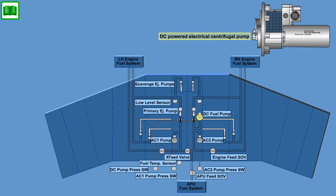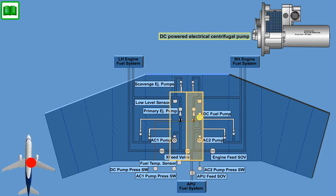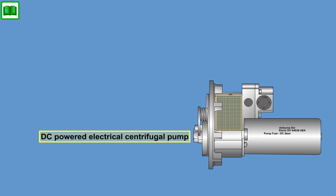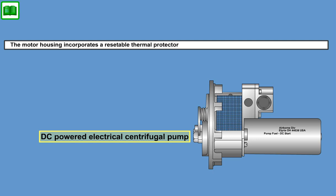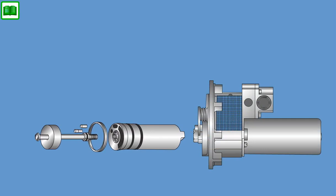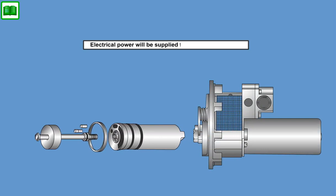A DC-powered electrical centrifugal pump located in the right-hand collector tank provides a source of pressurized fuel supply for APU and engine start in flight, or on the ground if the engine feed ejector pump and AC power or the AC auxiliary pump are not available. The inlet is equipped with a strainer to avoid ingestion of foreign objects. The motor housing incorporates a resettable thermal protector to ensure hazardous temperatures are not exceeded. The pump is a cartridge and canister type that allows removal of the pumping element without entering or draining the tank. Electrical power will be supplied from the essential DC bus 2.